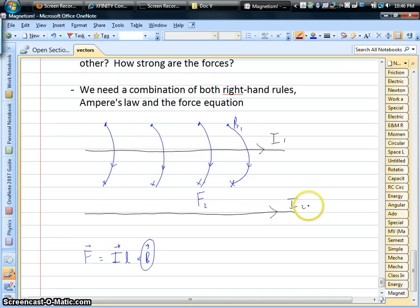So that means, if you're current 2, if you're the bottom wire, you're going to see a bunch of X's. That's the magnetic field that you experience. And that's the magnetic field coming from the top wire, from current 1.